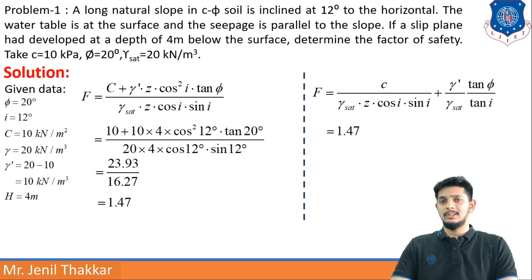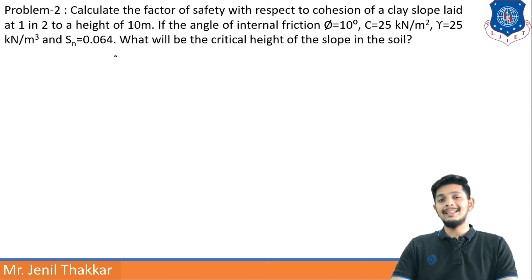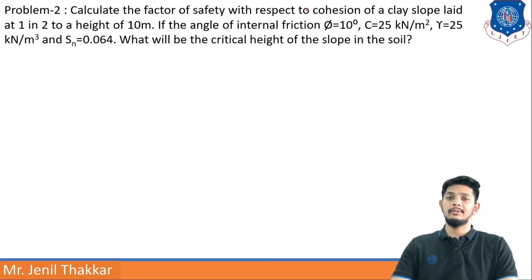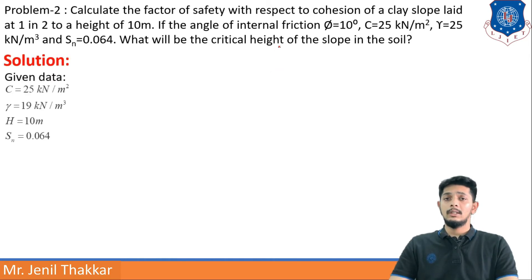This type of problem is asked in GATE exams for 5 marks generally. Problem 2: Calculate the factor of safety with respect to cohesion (FC) of a clay slope laid at 1 in 2 to a height of 10 meters. φ = 10 degrees, c = 25 kN/m², γ = 19 kN/m³ (note: written as 25 in problem but solved with 19), stability number SN = 0.064. Also find the critical height.